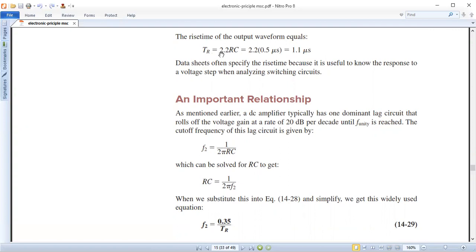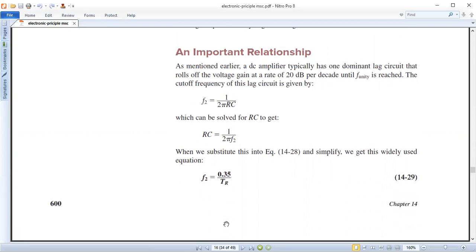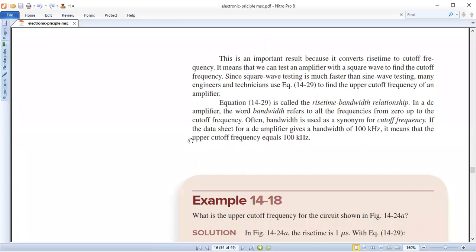What is RC? RC is TR by 2.2. I'll substitute that. We'll get the frequency as 0.35 divided by TR. So that is the relation between rise time and bandwidth.